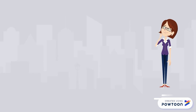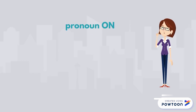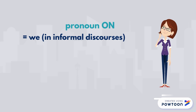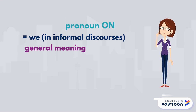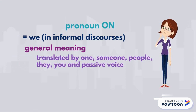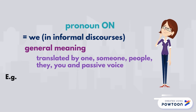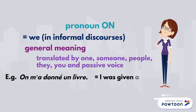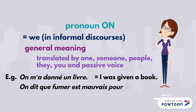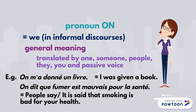You can also use the pronoun on. On can mean 'we' in informal discourse, but it can also have a general meaning. It can be translated by one, someone, people, they, you, and of course the passive voice in English. For instance, on m'a donné un livre — I was given a book. On dit que fumer est mauvais pour la santé — people say, or it is said, that smoking is bad for your health.